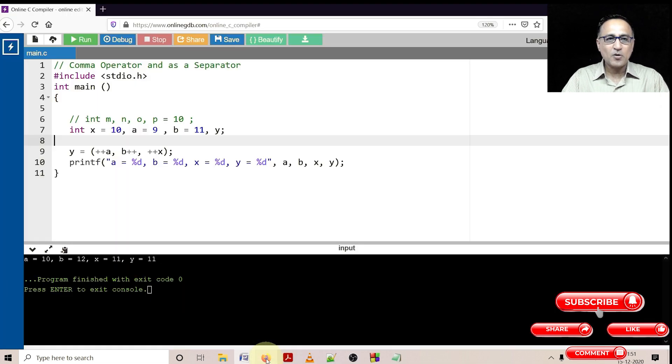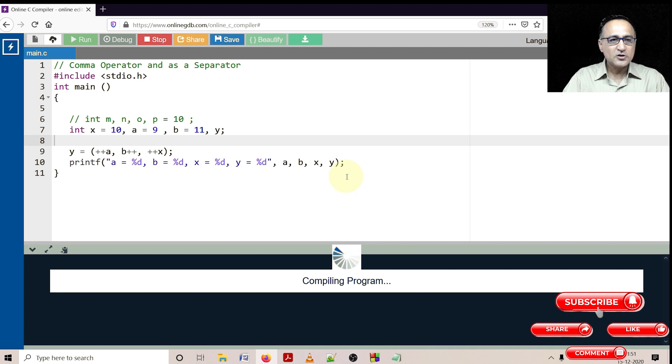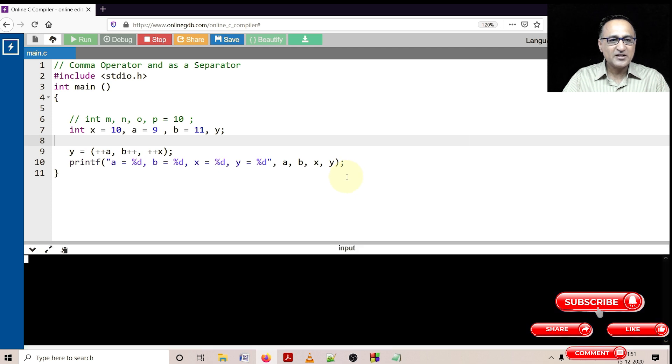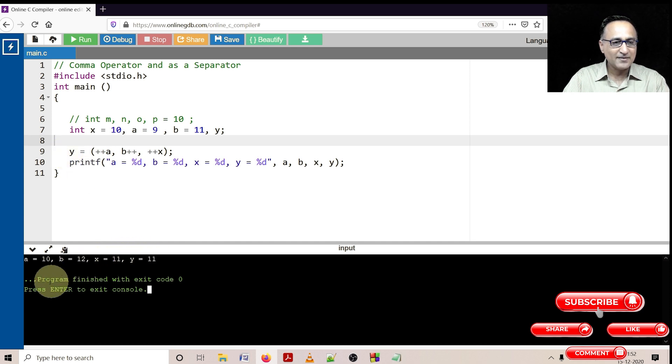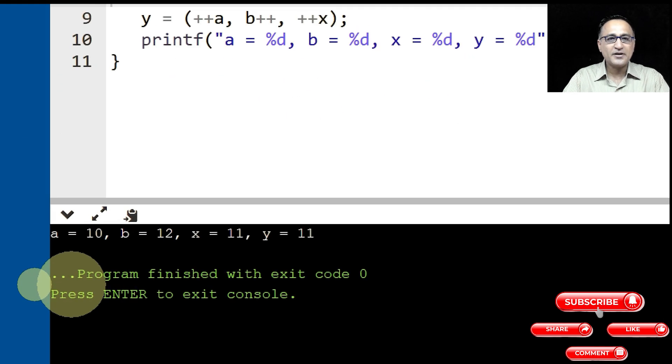To prove that our theory of comma operator works, let's try to do a demo. So here if you see, x is 10, a is 9, b is 11, y is nothing. a should have become ++, so it should have become 10. It is printing 10. b is also post increment from 11, it becomes 12. It has become 12. That means all the operands on the left side are getting increased or operated on. ++x, 10 becomes 11, but the value of 11 goes to y. So it should print the value of y as 11, which is doing it correctly. And x is also 11. So this should help you understand how the comma operator works.